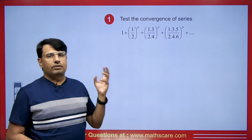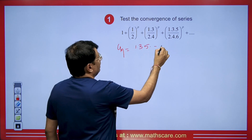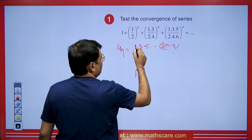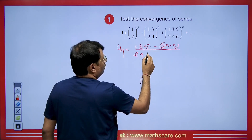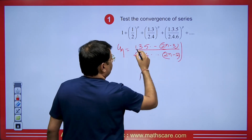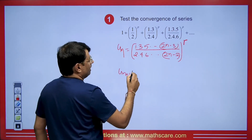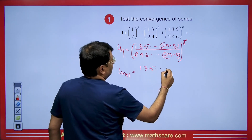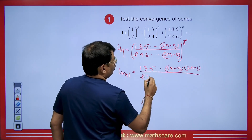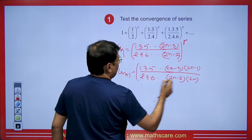Now look at this next question: test the convergence of the given series. The nth term of the numerator is 1, 3, 5, ... giving (2n−3)^p. The nth term of the denominator is 2, 4, 6, ... giving (2n−2)^p. For u_{n+1}, the numerator has an extra term (2n−1) and the denominator has an extra term 2n, both raised to power p.